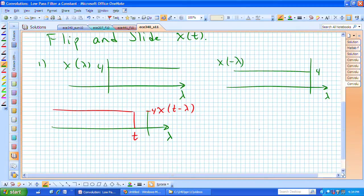And our impulse response waveform, which is now h of lambda, is this decaying exponential as a function of lambda.